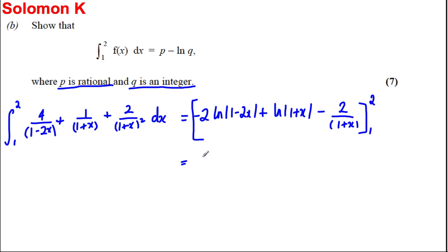And it's between 1 and 2. Let's substitute 2 in. This is negative 2 ln of (1 subtract 4), which would be negative 3, then modulus it, so just leave it as 3, plus ln of 3 subtract 2 over 3. Then we're going to take away the answer when we put 1 in. Subtract 2 ln of minus 1, which would be 1. Put in 1 here, plus ln 2, then subtract 2 over 2, which is 1.